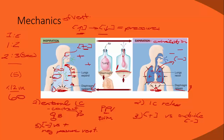Exhalation is passive — no muscles are working. Inhalation is active — muscle use is required. If you have to forcefully exhale, you're going to use internal intercostal muscles to do that. That's not normal, and those muscles are not well built compared to the external intercostal muscles.